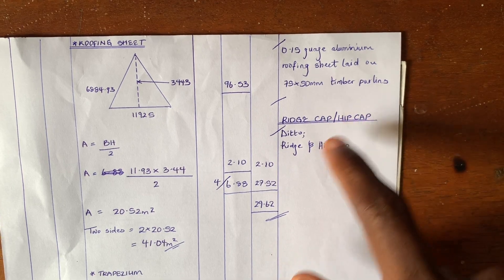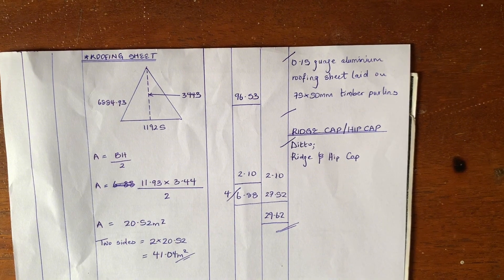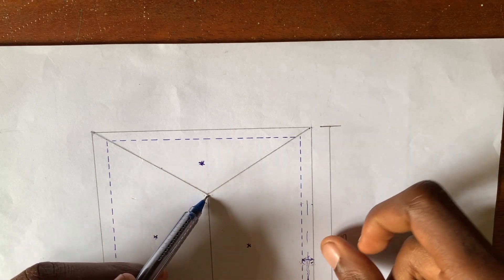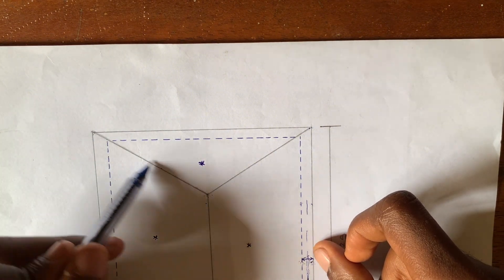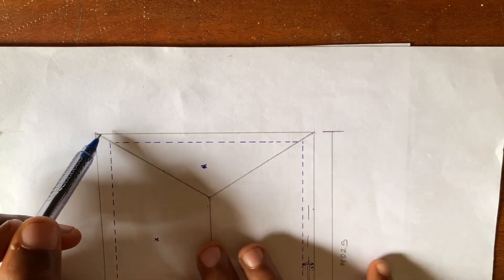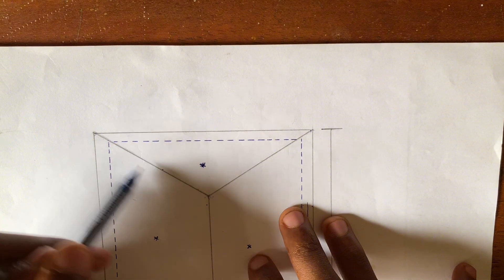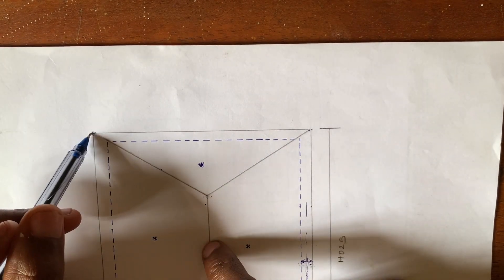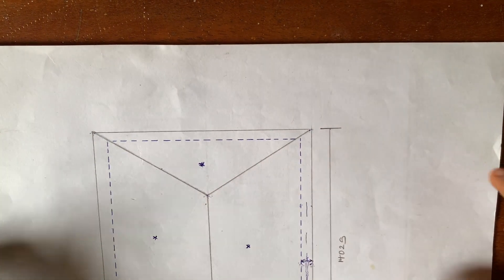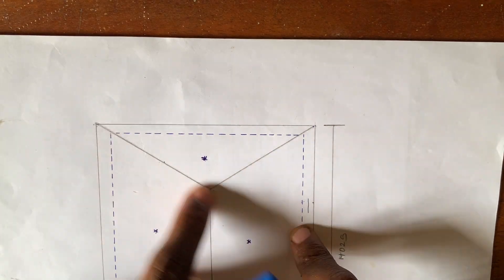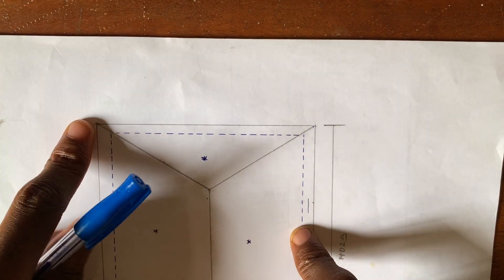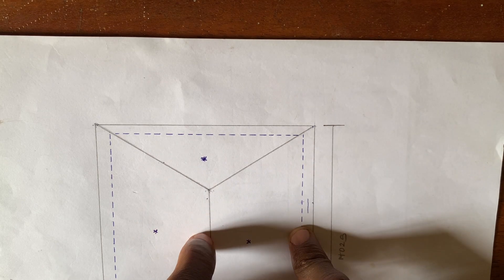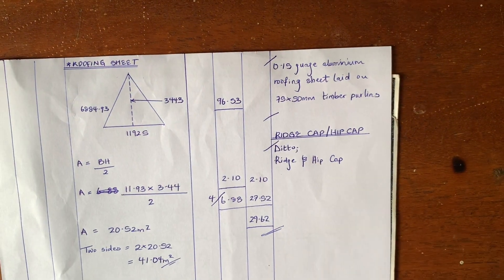The ridge cap and hip cap are made of the same material as the roofing sheets. They are used to line and close the openings — when laying roofing sheets there is roughness along the edges, so you close it with the hip cap at the hips and the ridge cap at the top. To measure the hip cap, use the value of your hip rafter; to measure the ridge cap, use the measurement of your ridge board.